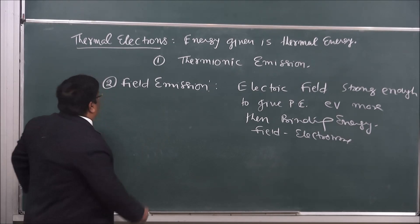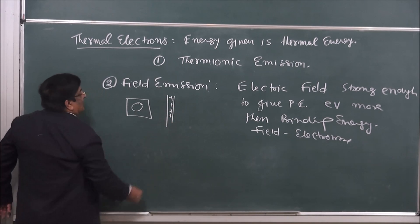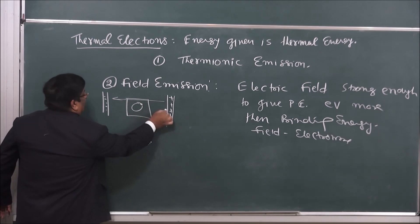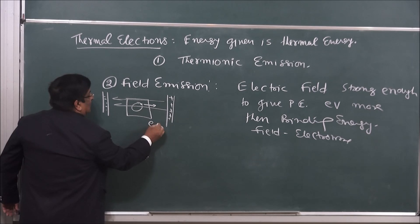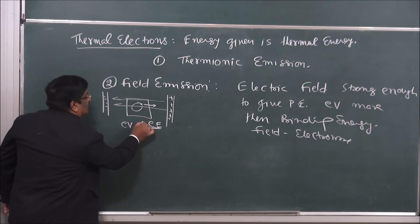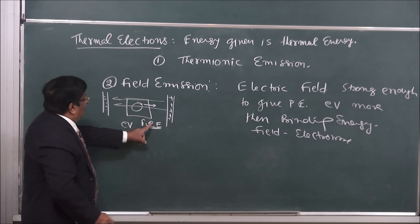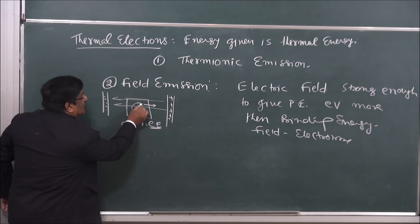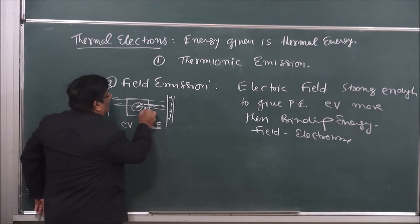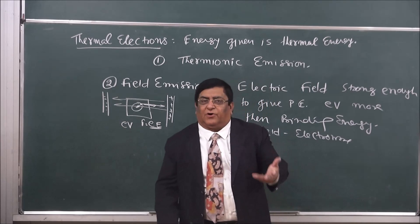If we have a metal with positive charges on a plate, then here the electric field will be negative-positive. This electric field exerts a force on the electron — E into the electric field. The potential difference gives energy E into V. If this energy is sufficient, the force of attraction will be overcome and the electron will come out of the metal. When the electron is pulled out by the electric field, this is known as field emission, and these electrons are known as field electrons.